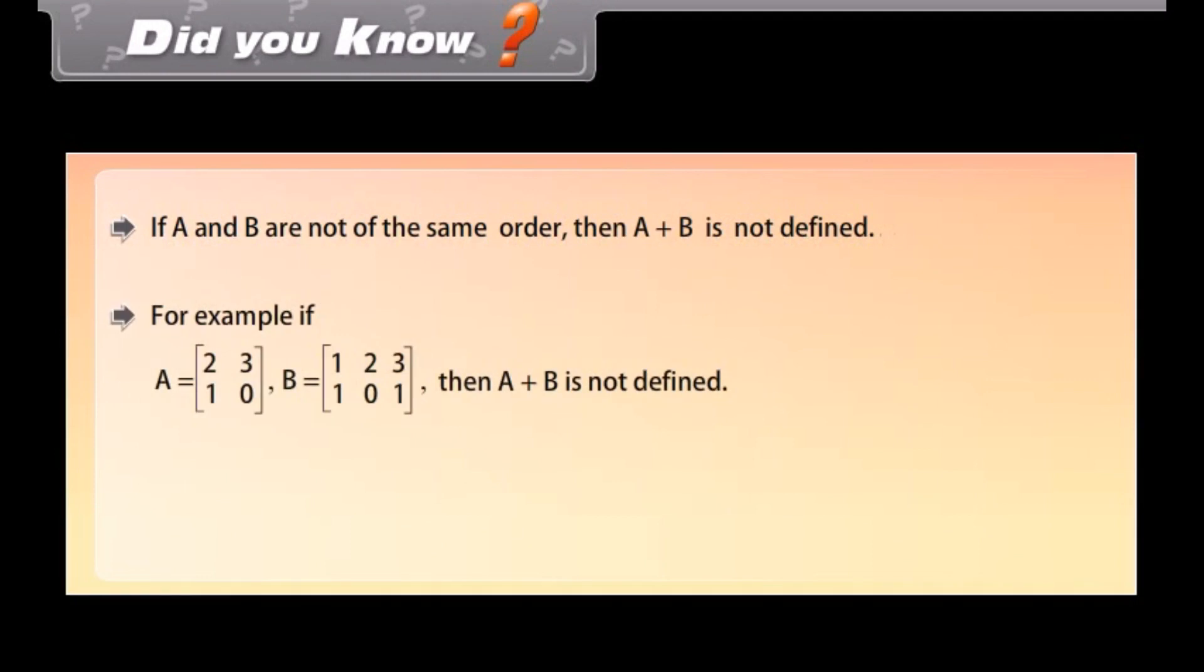Did you know, if A and B are not of the same order, then A plus B is not defined. For example, if A is equal to row-wise 1st row 2, 3, 2nd row 1, 0, B is equal to row-wise 1st row 1, 2, 3, 2nd row 1, 0, 1, then A plus B is not defined. Addition of matrices is an example of binary operation on the set of matrices of the same order.